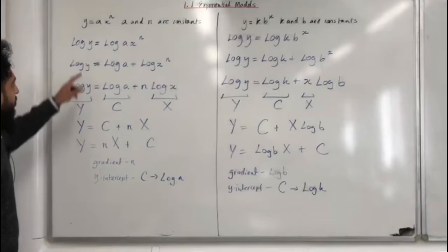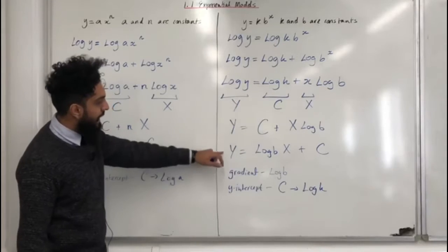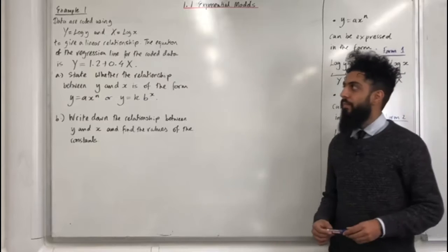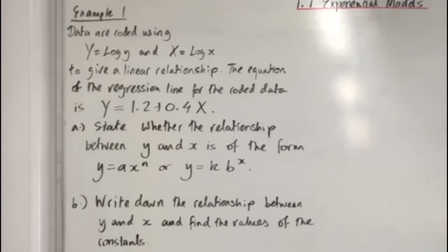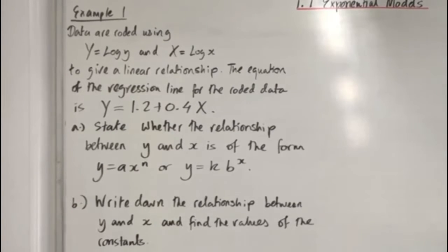So we've got this model transformed into a linear model, and this exponential model transformed into a linear model. Let's have a look at example number one. Data are coded using capital Y equal to log y and capital X equal to log x to give a linear relationship. The equation of the regression line for the coded data is capital Y equal to 1.2 plus 0.4 multiplied by capital X. Part A: state whether the relationship between y and x is of the form y equal ax to the power n, or y equal kb to the power x.